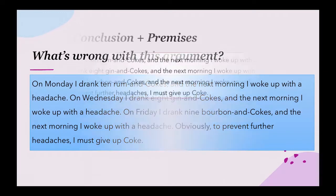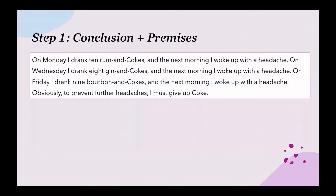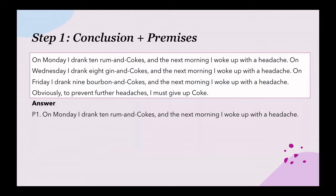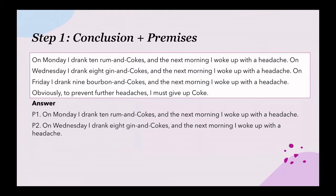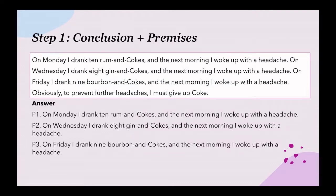So what's wrong with this argument? The first step is to identify the conclusion and the premises. Premise one, premise two, and premise three are the three observations about drinking and getting headaches. The conclusion is: obviously, to prevent further headaches, I must give up coke.